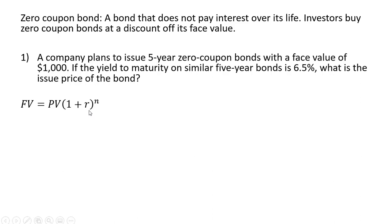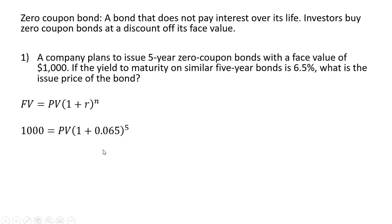R in this problem is the interest rate or rate of return, and that is 6.5%, so we're going to plug in 0.065 — R enters in the form of a decimal. And n here is the number of years, so n will be 5. Plugging all those values into our formula, we're now going to solve for PV, which is going to be the issue price of the bond.